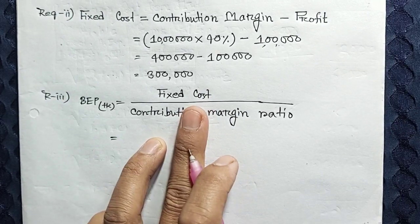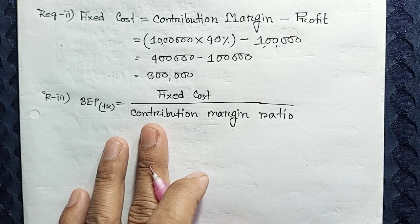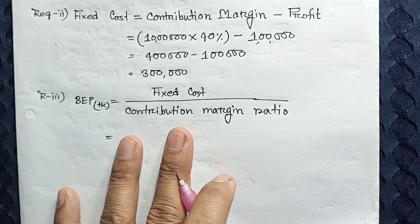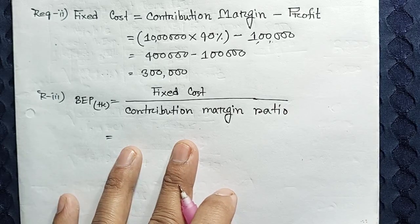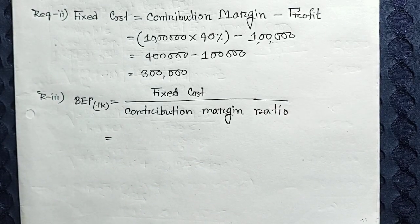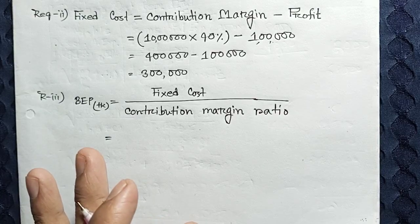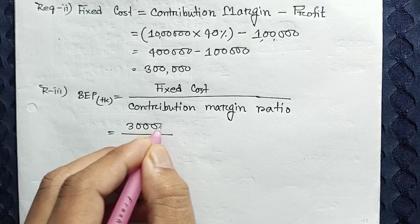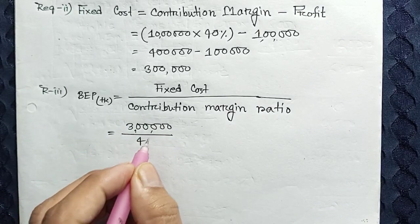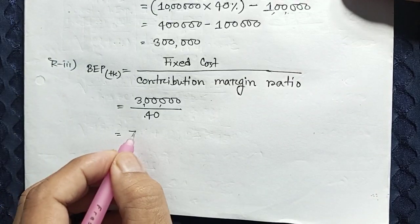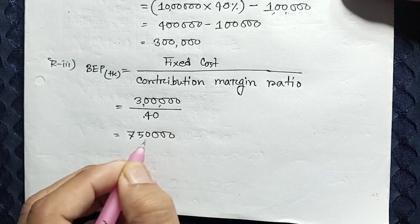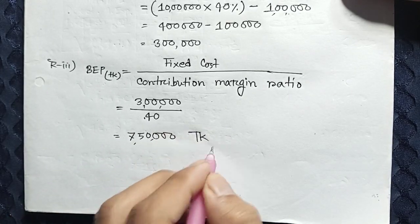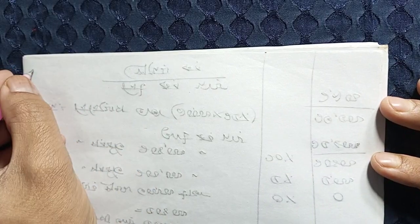So Break-Even Point equals Fixed Cost divided by Contribution Margin Ratio. We have the fixed cost from requirement 2, and the contribution margin ratio is 0.40 from requirement 1. Dividing fixed cost by 0.40 gives us the break-even point in Taka. That completes requirement 3.